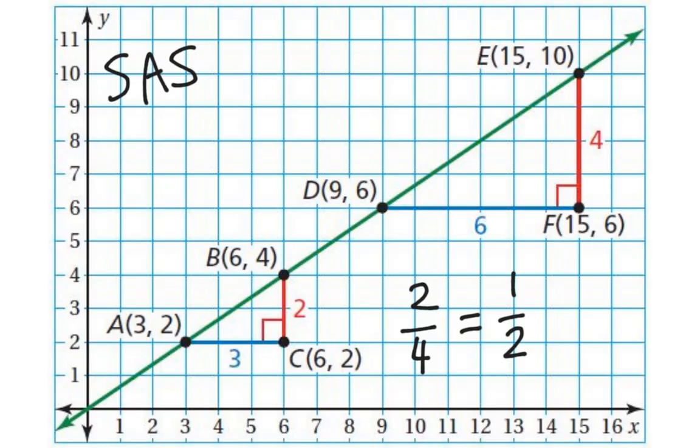The red lengths would be 3 over 6, which also simplifies to 1 half. So, then, the ratio of the corresponding sides is in proportion, and I have one congruent angle between those corresponding sides. I have satisfied the side angle side criteria to show these triangles must be similar to each other.